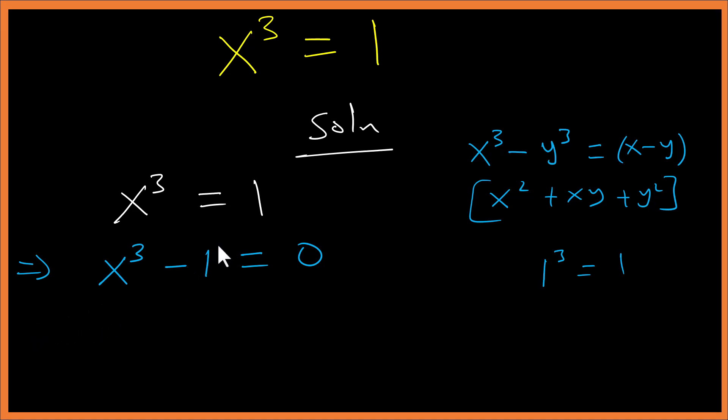So with this we have (x - 1)(x² + 1×x + 1²) equals 0. So with a zero product, x - 1 equals 0 or x² + x + 1 equals 0.